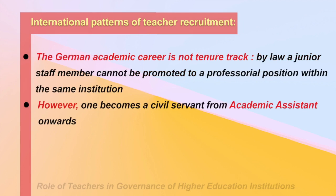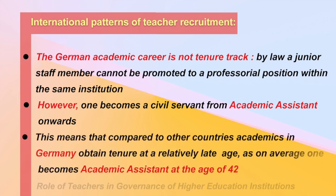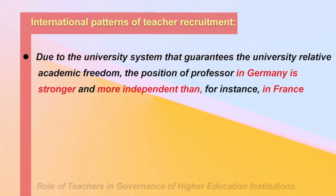The German academic career is not tenure-track. By law, a junior staff member cannot be promoted to professor within the same institution. However, one becomes a civil servant from academic assistant onwards. Academics in Germany obtain tenure at a relatively late age — on average one becomes an academic assistant at age 42. Due to the university system guaranteeing relative academic freedom, the position of professor in Germany is stronger and more independent than, for instance, in France.